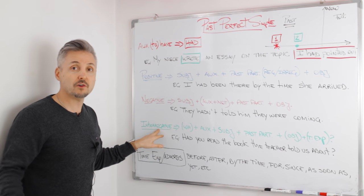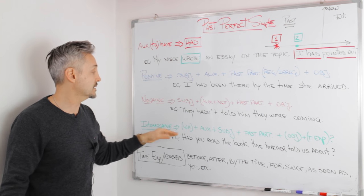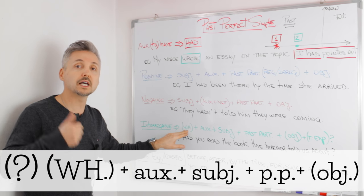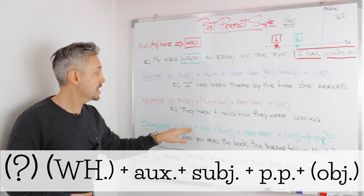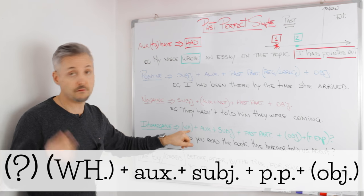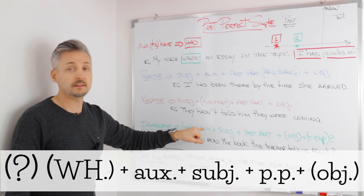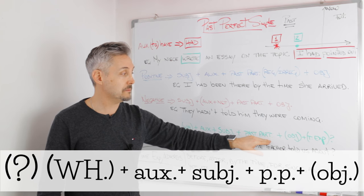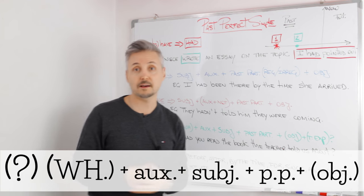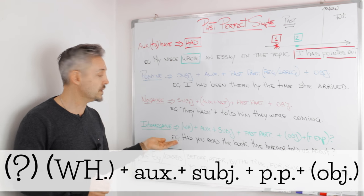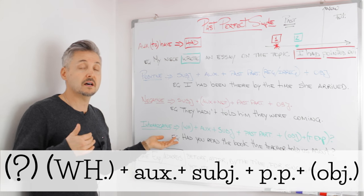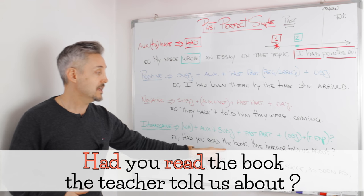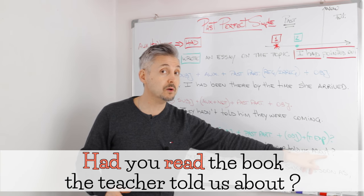So let's look at an interrogative sentence then. WH question word, which is why, who, where, etc., if there is, before number one, then the auxiliary, then the subject, then the past participle, and then if there is an object or a time expression. So in this case, my introductory example was, had you read the book the teacher told us about?